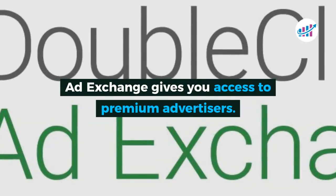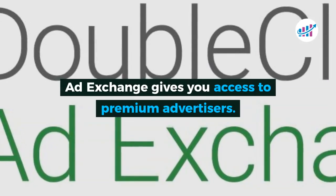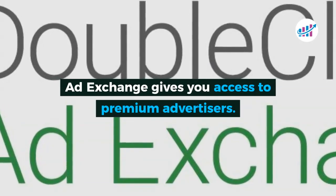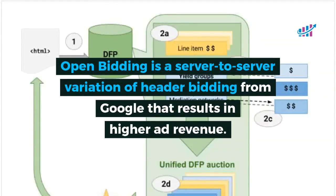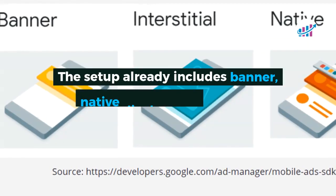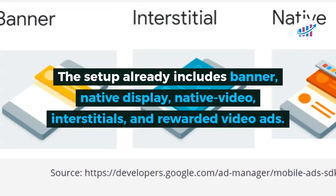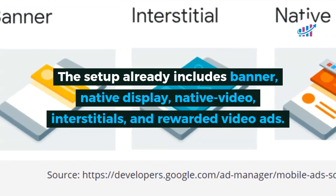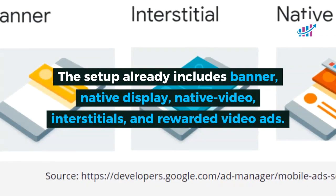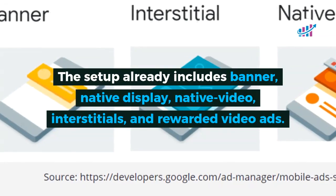Ad Exchange gives you access to premium advertisers. Open bidding is a server-to-server variation of header bidding from Google that results in higher ad revenue. The setup already includes banner, native display, native video, interstitials, and rewarded video ads.